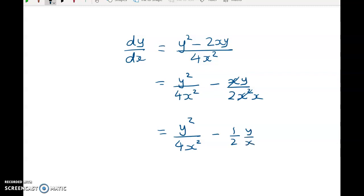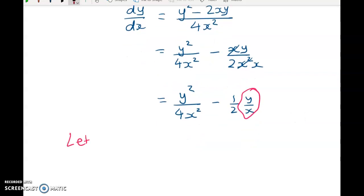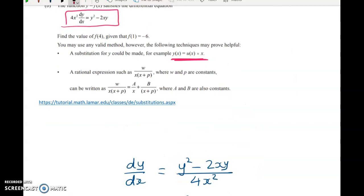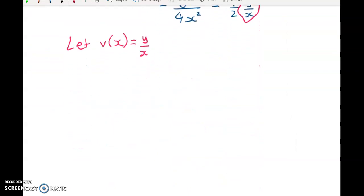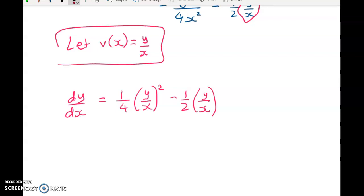Because what we're going to be doing is instead of working with Y, we're going to do a substitution where we work with a function V. And so we're going to say let V of X, or we could have done U of X, let V of X equal Y over X. And there's a whole family of differential equations. We're doing this substitution makes things go much better. And so to look at those, go have a look at this website here. So we're rearranging this so that we've got DY by DX is equal to 1 quarter of Y over X squared minus a half Y over X. And so we're letting V of X equal Y over X.